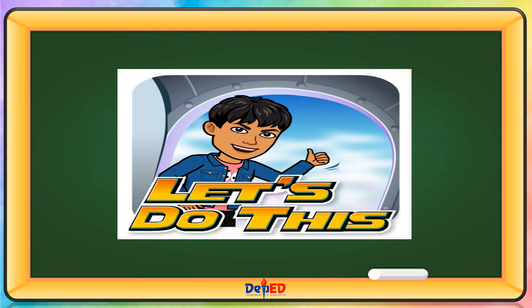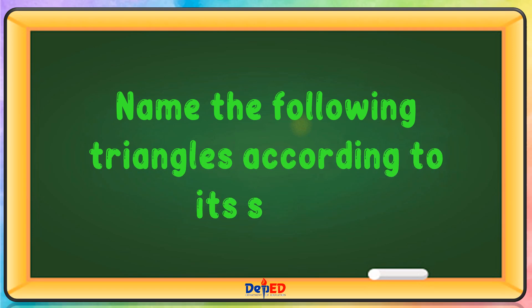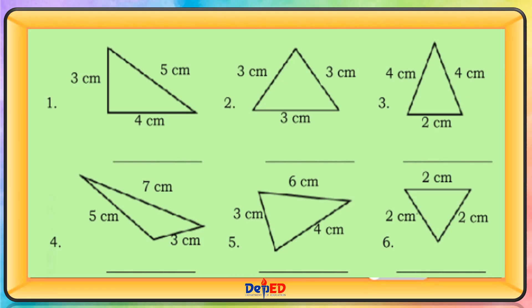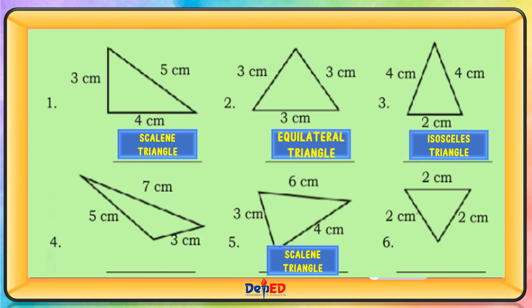Let's do this. Name the following triangles according to its sides. The first triangle is a scalene triangle. The second triangle is an equilateral triangle. The third triangle is an isosceles triangle. The fourth triangle is a scalene triangle. The fifth triangle is a scalene triangle. And the sixth is an equilateral triangle.